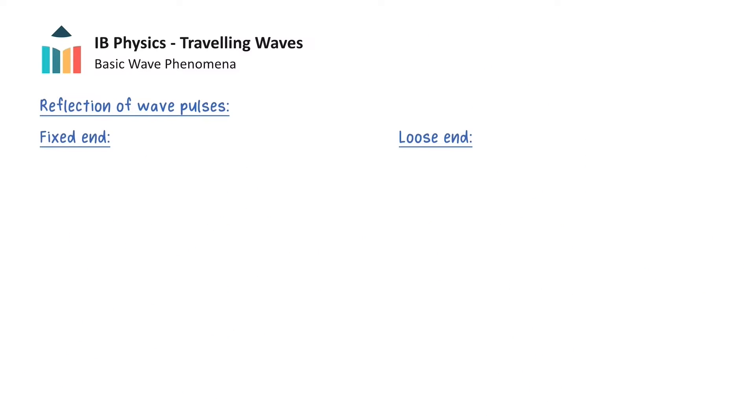When a wave pulse travels through a given medium such as a rope, the pulse will be reflected differently if the rope has one end fixed which cannot move, or one loose end that is free to move.